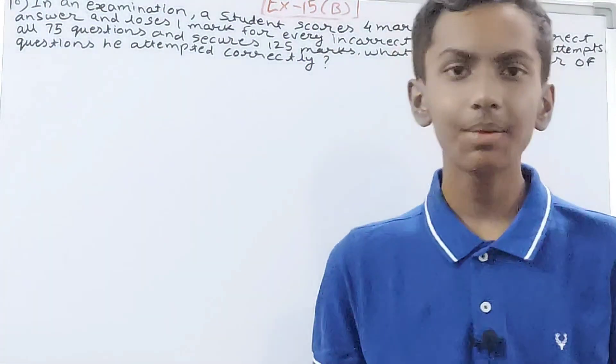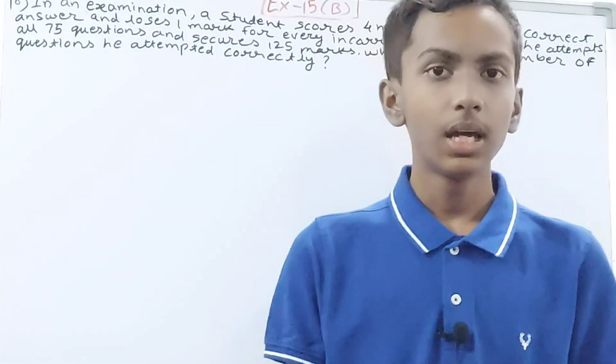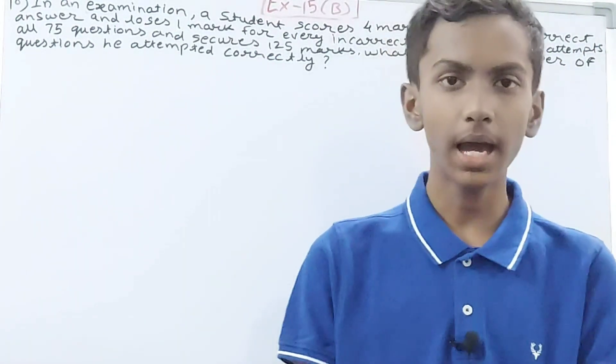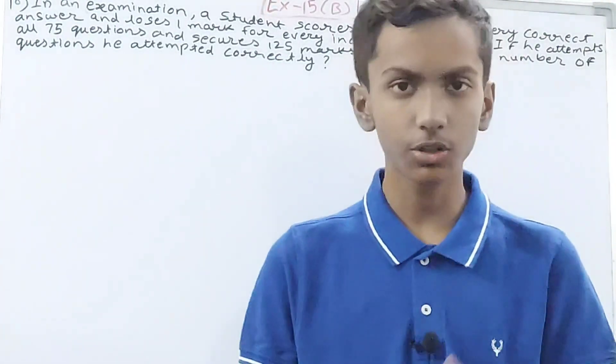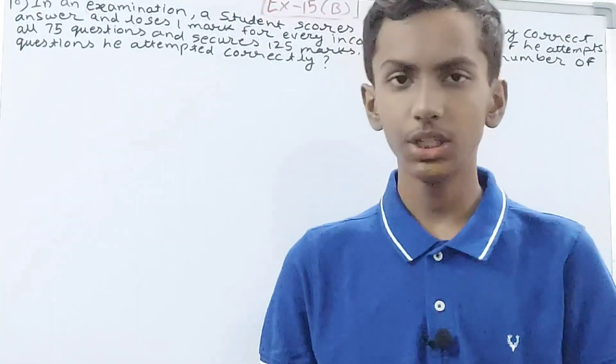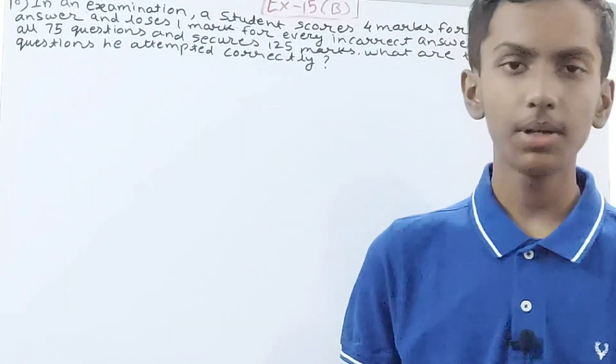Now, in this examination there are 75 questions which the student has attempted. After attempting, he gets 125 marks. For every correct answer he gets four marks, and for every incorrect answer he loses one mark. So what is the number of questions he attempted correctly?